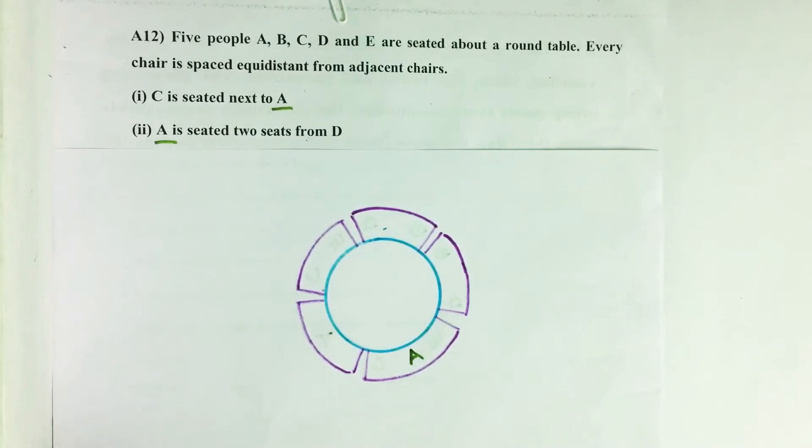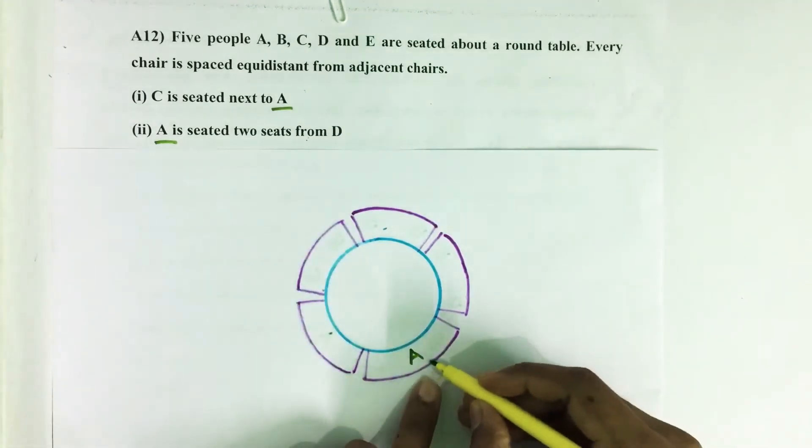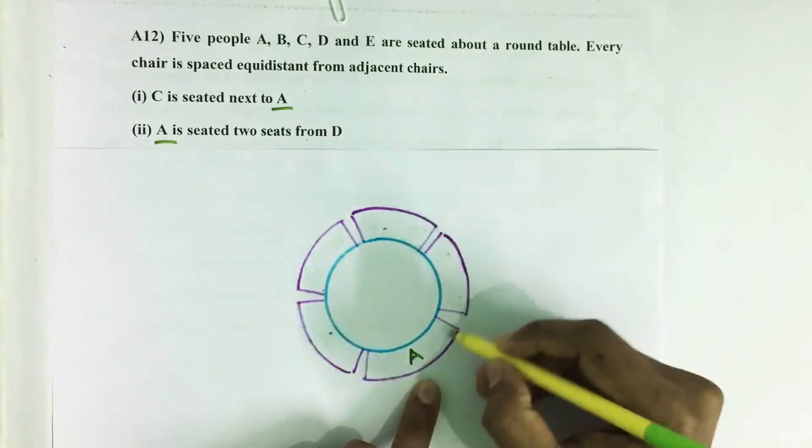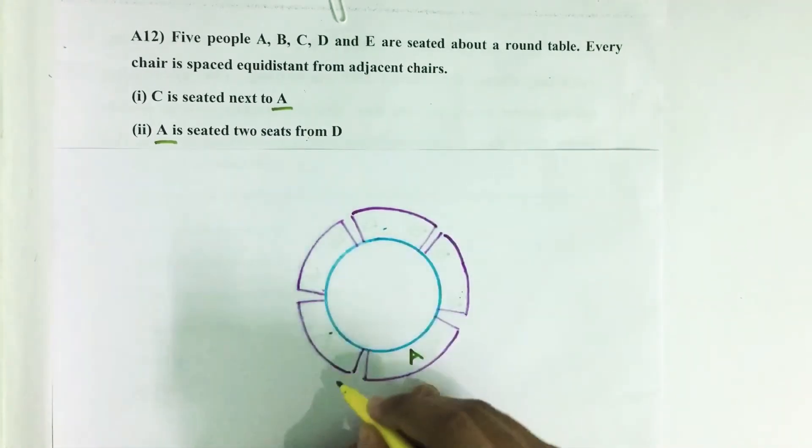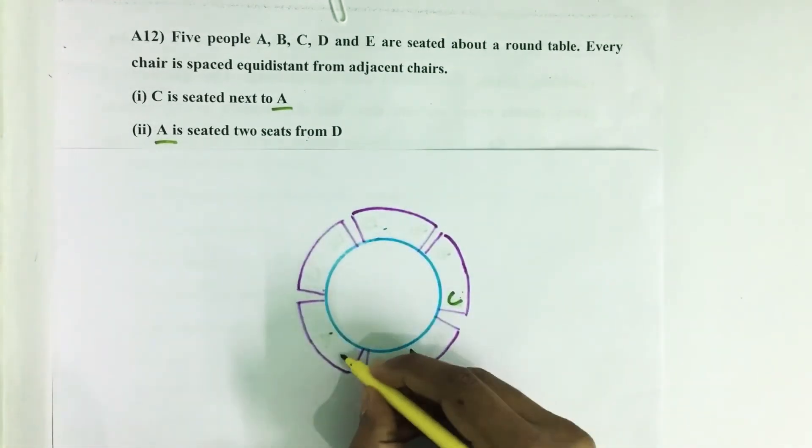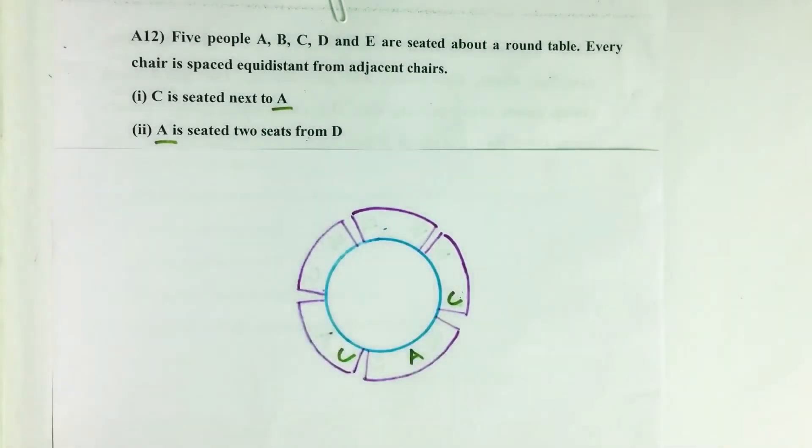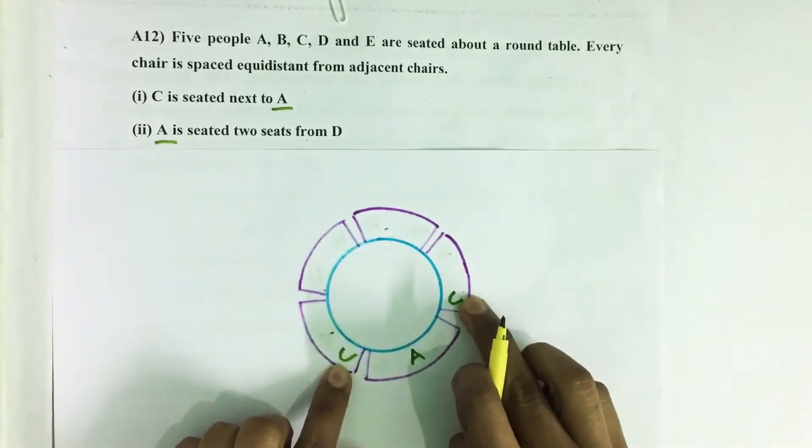C is seated next to A. So there are two possible seats next to A, either on the right of A or left of A. So C can sit in this seat or here also. This is the first statement.